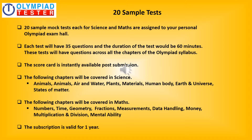Science and Maths sample tests are assigned to your Personal Olympiad Exam Hall. We recommend that these tests should be taken about 45 days before the actual Olympiad exam. Each test will have 35 questions and the duration would be 60 minutes, with 5 minutes extra for reading the instructions. These tests will have questions across chapters of the Olympiad syllabus, and the scorecard is instantly available post submission.